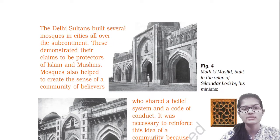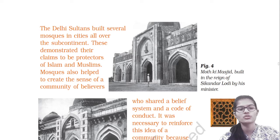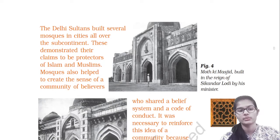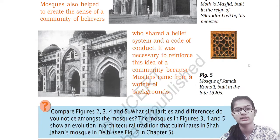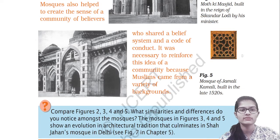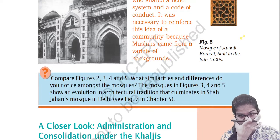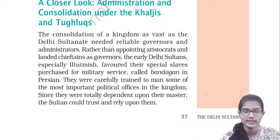During prayer, Muslims face Mecca — in India this is to the west — and this direction is called the Qibla. The Delhi Sultans built several mosques across the subcontinent, demonstrating their claim to be protectors of Islam and Muslims. These mosques also helped create a sense of community among believers who shared a belief system and a code of conduct, which was necessary because Muslims came from a variety of backgrounds.